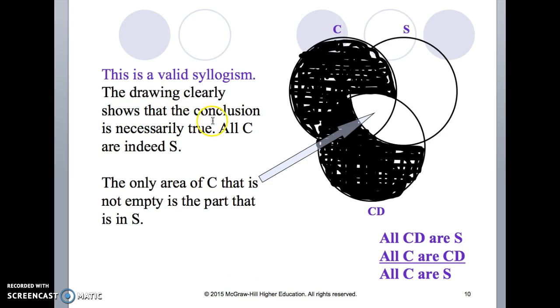The drawing clearly shows that the conclusion is necessarily true. All C is indeed in the S circle. The only area of C that is not empty is the part that is in S. This is a valid inference, a valid deduction.